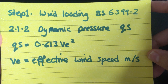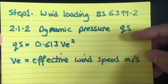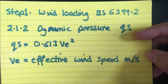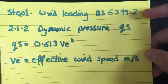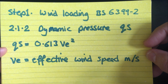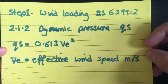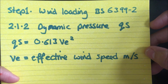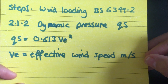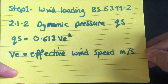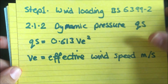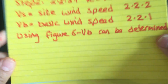The first thing you're going to work out is the dynamic pressure, which has the symbol QS. This can be found in section 2.1.2 of the British standard. QS equals 0.613 times VE squared, where VE stands for effective wind speed in meters per second. In order to work out VE we need to move on to step two.